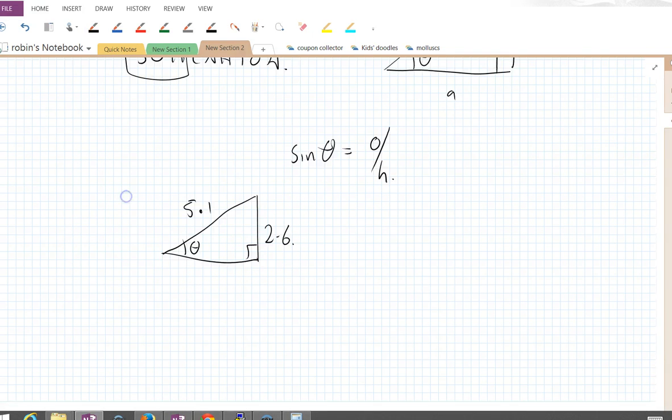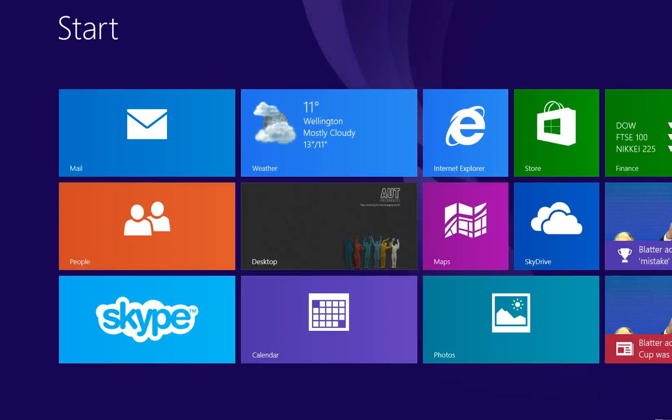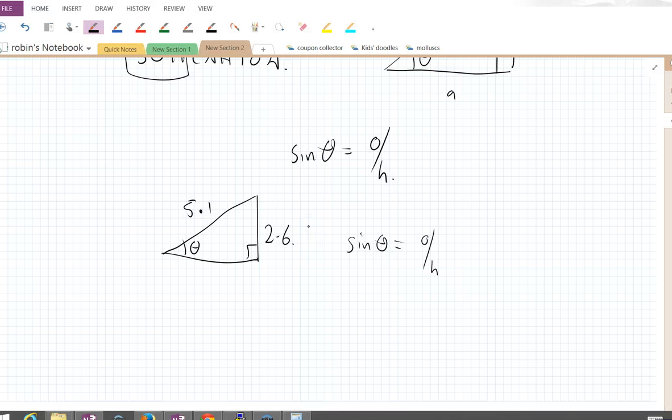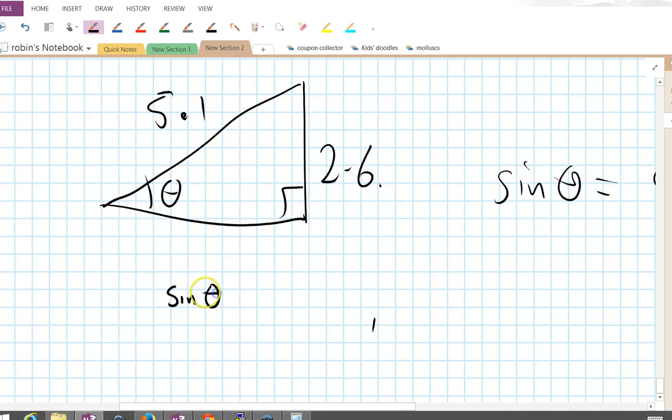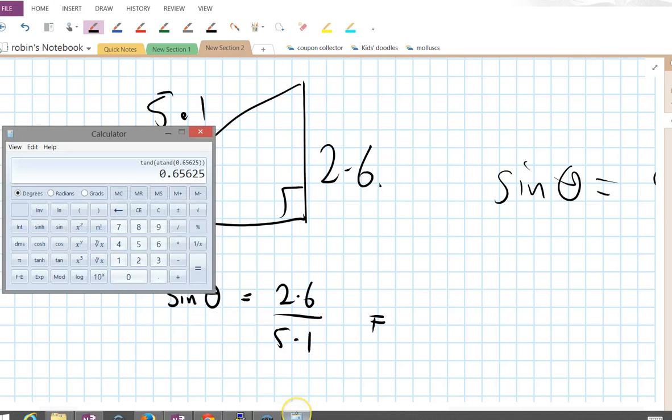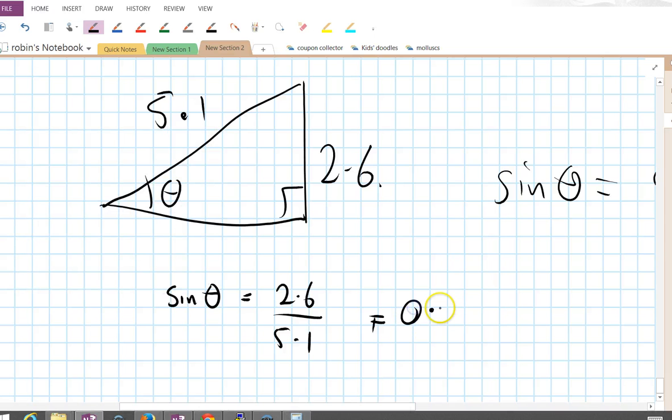We know that sine theta equals opposite over hypotenuse. So sine theta in this case is equal to 2.6 over 5.1, which equals 0.51.